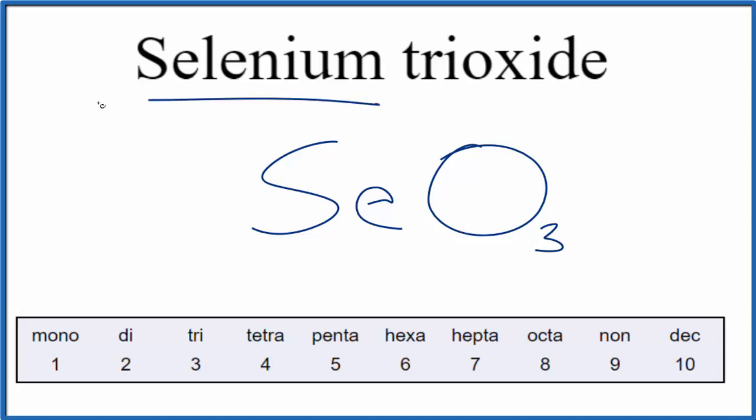So for SE, you write selenium, and we don't write anything in front of the first element if there's only one, we just leave it blank. For the oxygen, we would put a tri, because we have three of those.